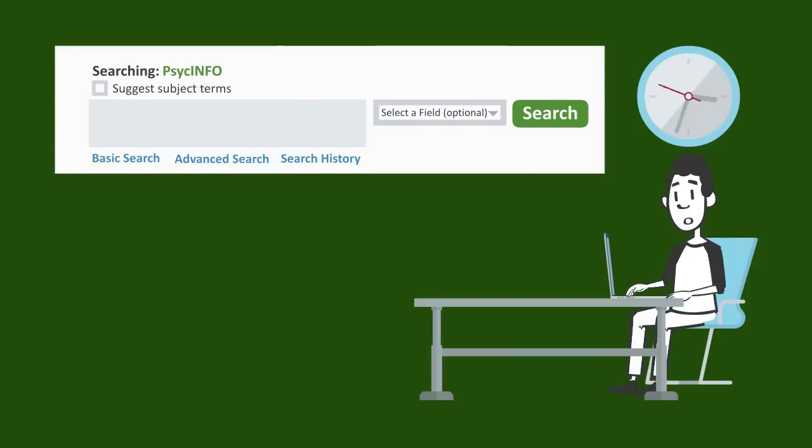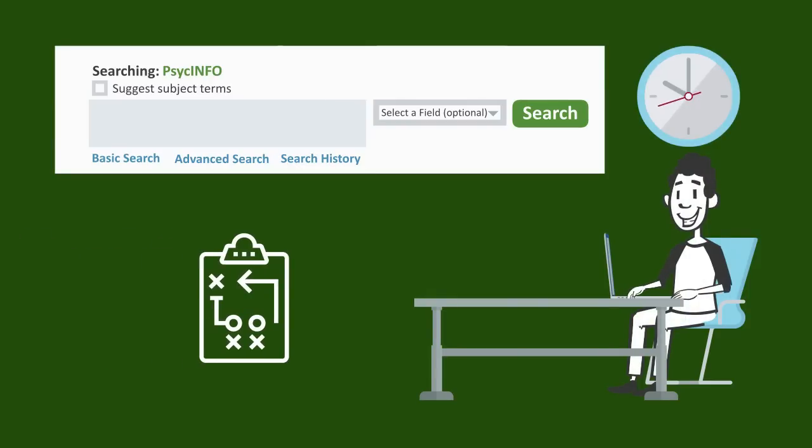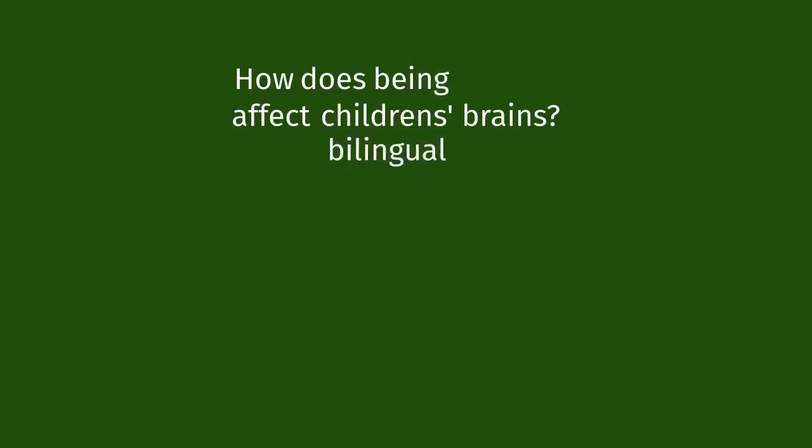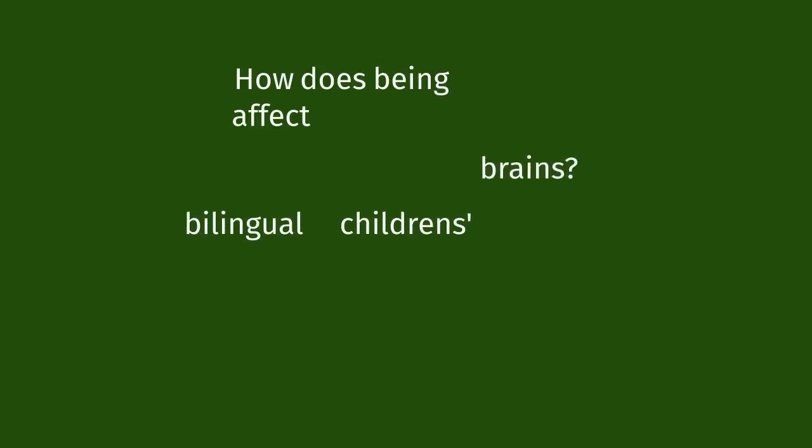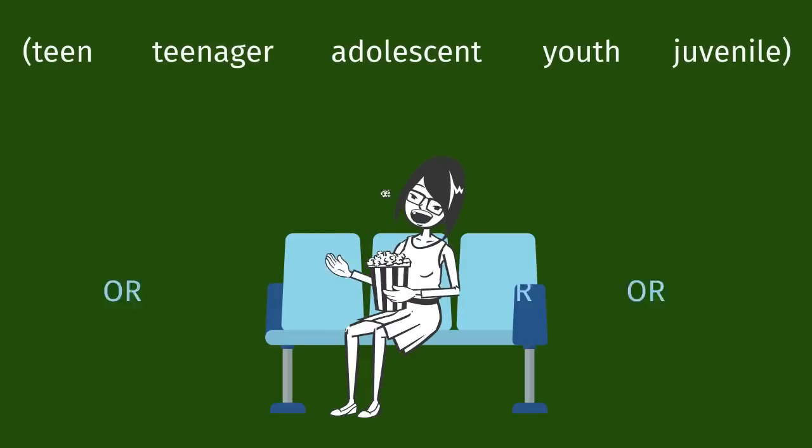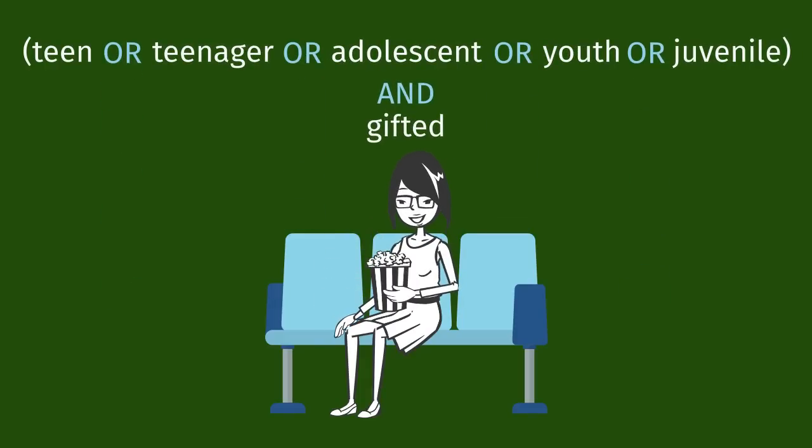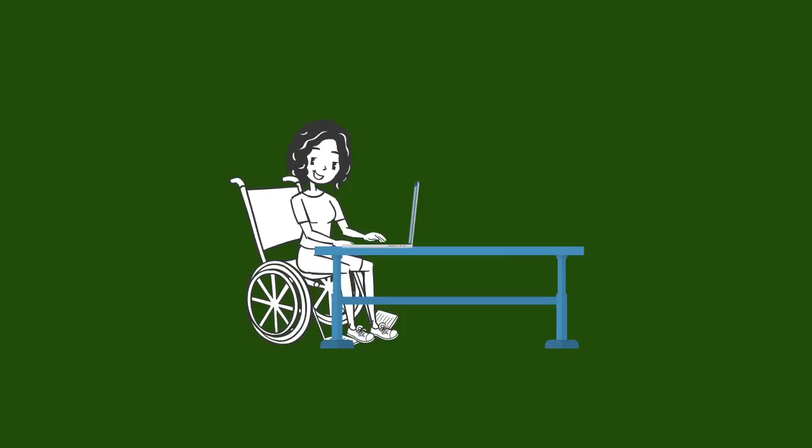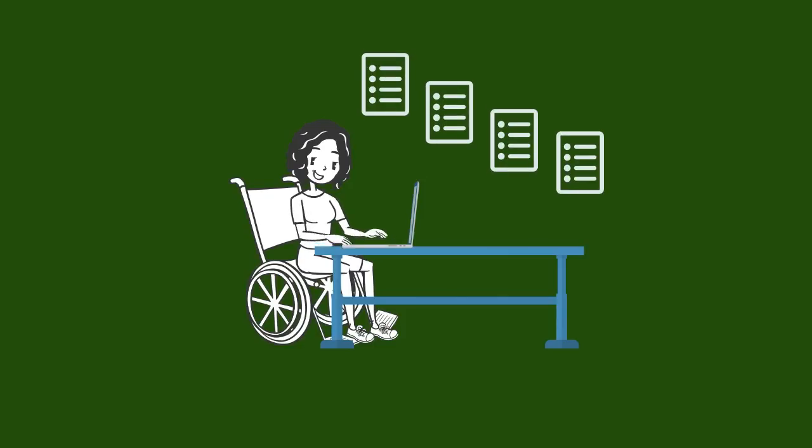So next time you need to use a library database, save yourself time, effort, and frustration by following these steps. Enter only those words that are directly related to concepts in your research question. Eliminate words that are not relevant. Come up with synonyms and other words related to your keywords. Put them together with ANDs and ORs. This will give you results that are much more relevant than if you just pasted the question into the search box.